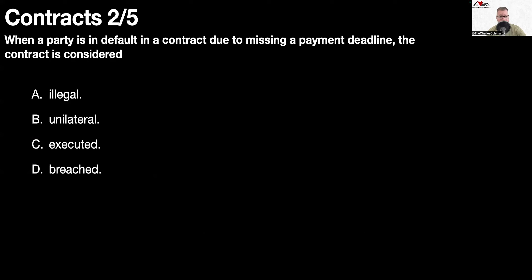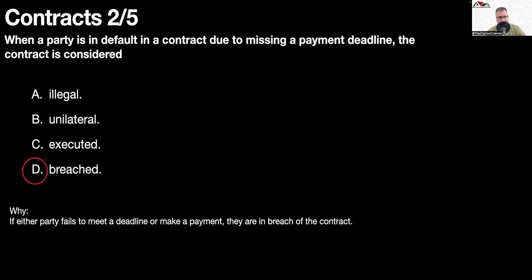Question number two: when a party is in default in a contract due to missing a payment deadline, the contract is considered breached. If either party fails to meet a deadline or make a payment, they are in breach of the contract.